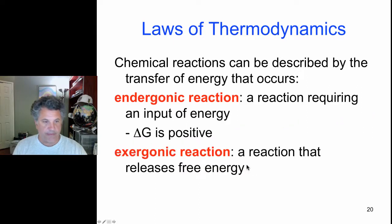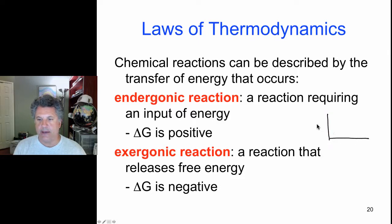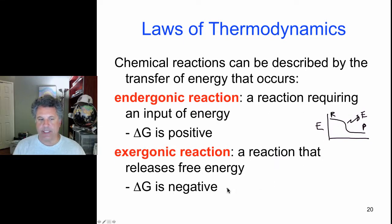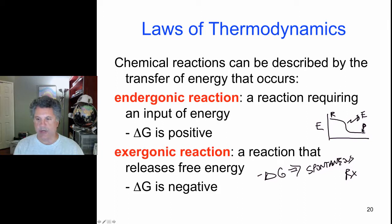An exergonic reaction is a reaction that releases free energy, and there delta G is negative. The products have a lower energy than the reactants, so energy can be released as the system achieves a lower energy state. When delta G is negative, we have a spontaneous reaction because we achieve a lower energy state, which is thermodynamically favorable.